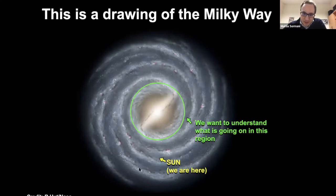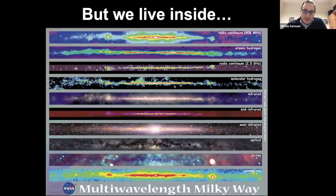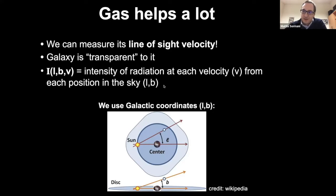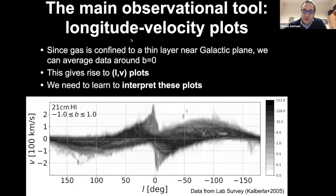This is the usual drawing of the Milky Way. The sun is down here, and what we want to understand is what goes on in this central region. The bar here is a very non-axisymmetric feature. The challenge is that we live inside, so it's not easy to unravel what the galaxy would look like if we could fly above it. The gas helps a lot, because in addition to the amount of gas at each position in the sky, we can also measure its line-of-sight velocity. This gives rise to data cubes, which are the intensity of radiation at each velocity from each position in the sky. Our first task is to learn how to interpret these data cubes.